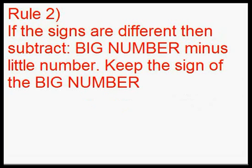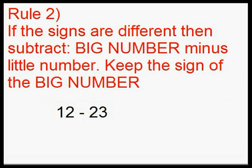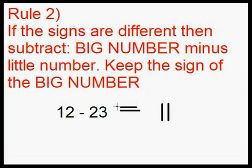Rule 2: if the signs are different, then subtract — big number minus little number — and keep the sign of the big number. For an example, we'll have 12 minus 23. We know that 12 is positive because there is no sign in front of it; whenever there isn't a sign in front of a number, it's positive. So we have different signs: a positive 12 and a negative 23. 23 is the bigger number, so we do 23 minus 12, which equals 11. We keep the sign of the big number, which is 23, and negative is in front of the 23, so our final answer is negative 11.